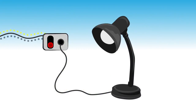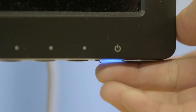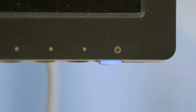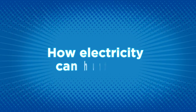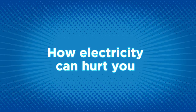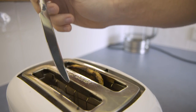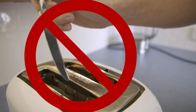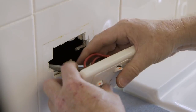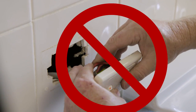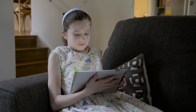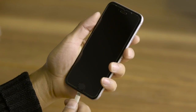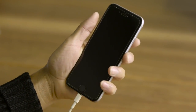For an electrical appliance to work, a switch is used to break a circuit so that you can turn electrical appliances and lights on and off. If you interfere with an electrical circuit, electrons can escape, and this isn't good.